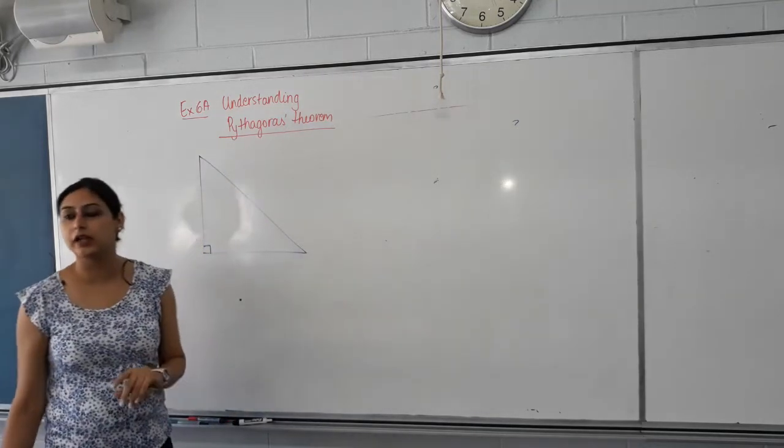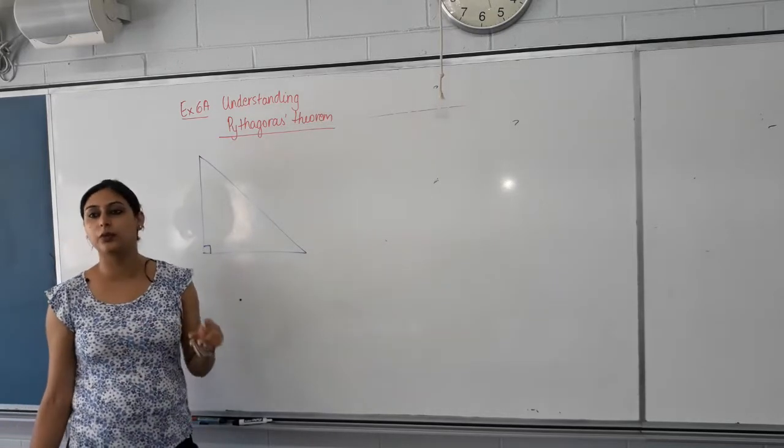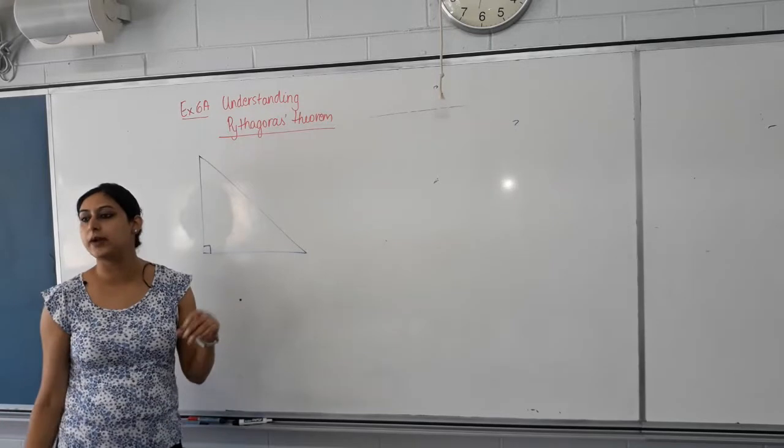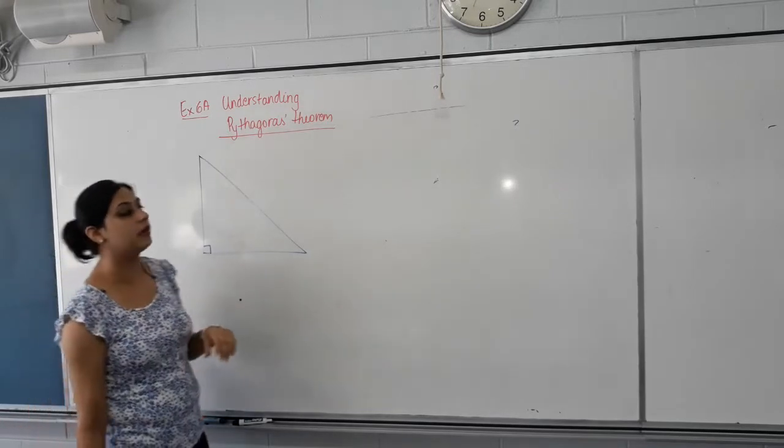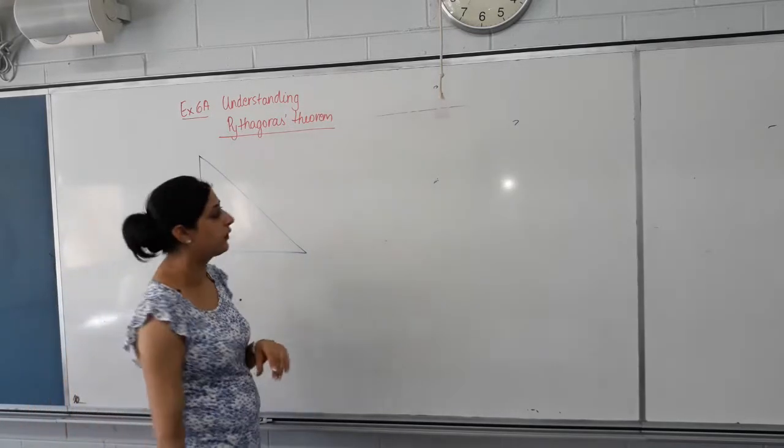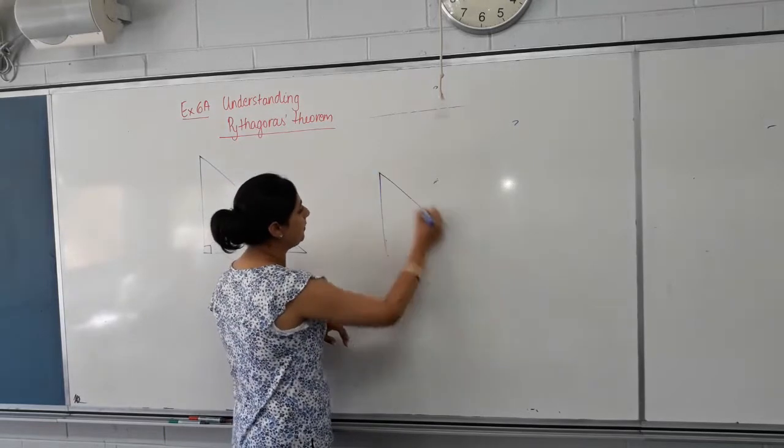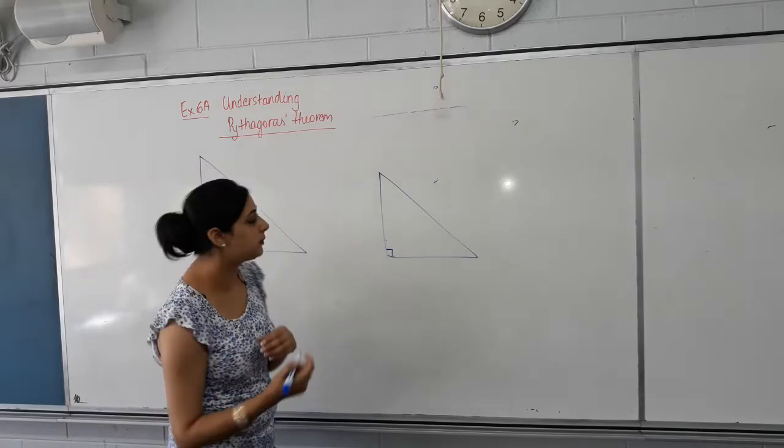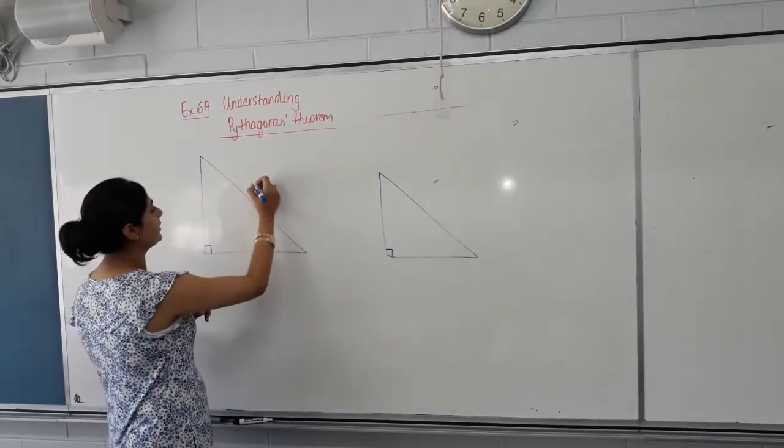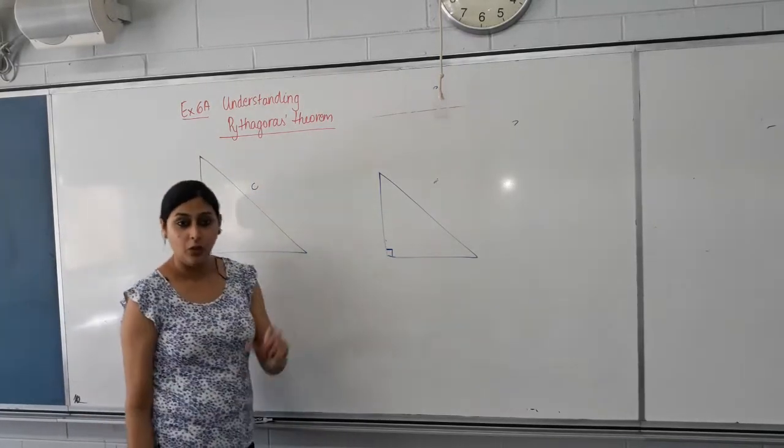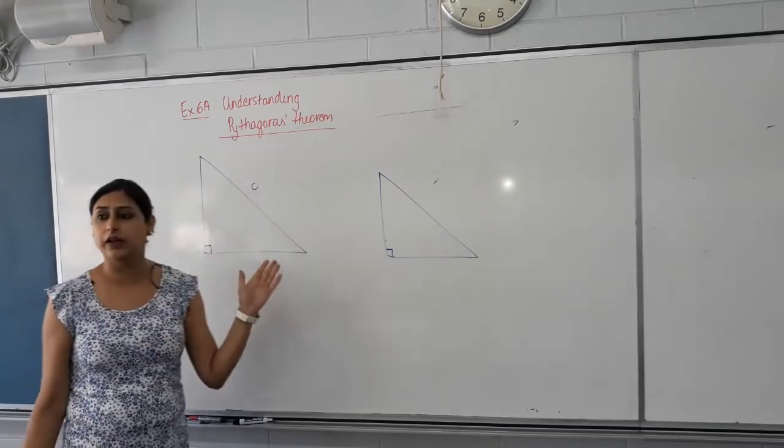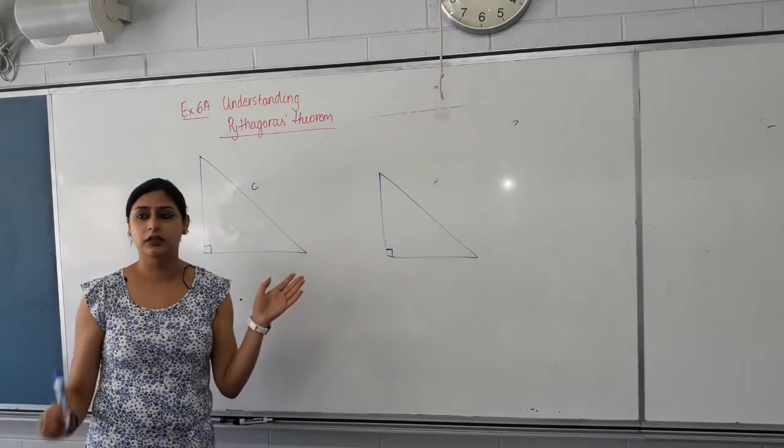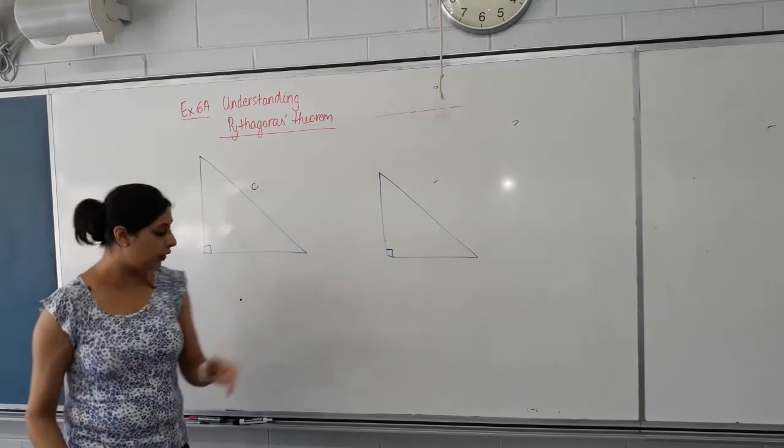Now, what happens in a right angle triangle is, we will do visual proofs later on when we have time. Today, we're just going to understand the mathematical way of writing Pythagoras' theorem. So what Pythagoras found, and a lot of other mathematicians found, was that there was a relationship between the lengths of a triangle if it's a right angle triangle. And the relationship that we found was, if this length is labelled as C, what is special about this side of the right angle triangle? Is there a special name assigned to this side?